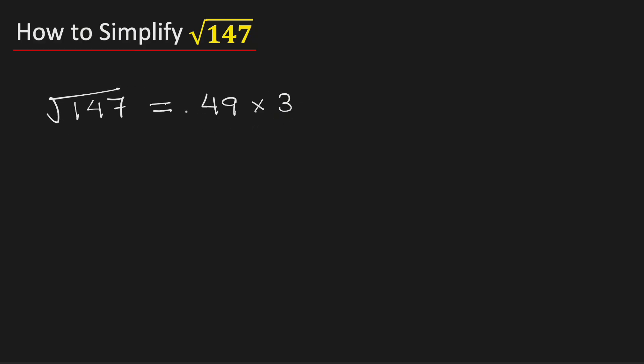Now take the square root on both sides. We can rewrite this as square root of 49 times square root of 3, using the rule of square root of a times b is equal to root a times root b.